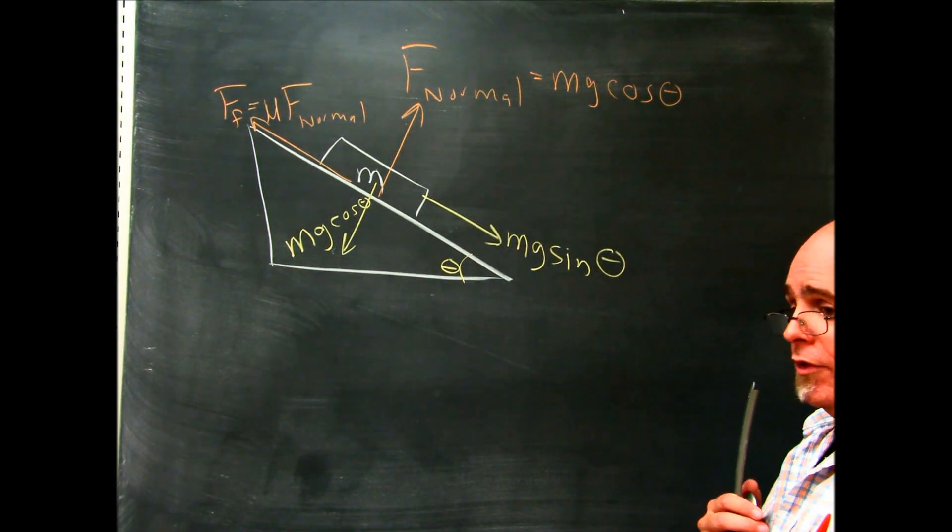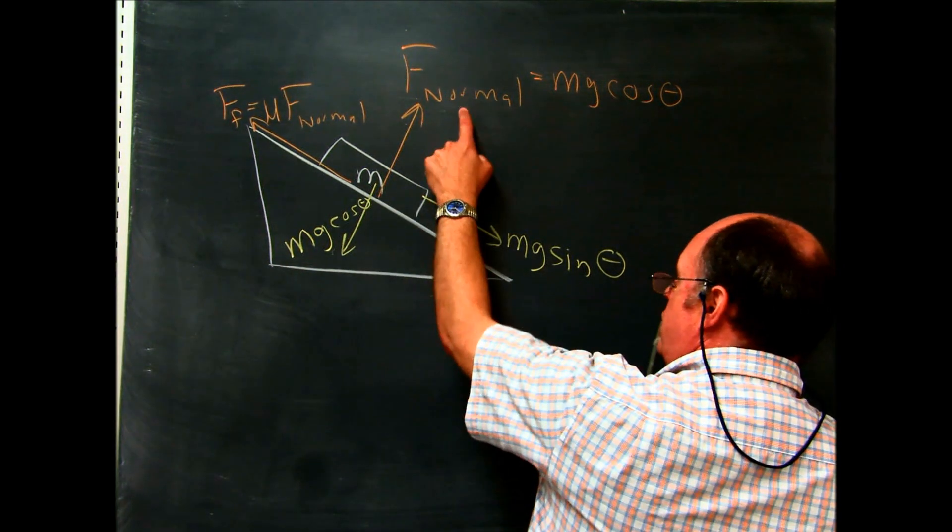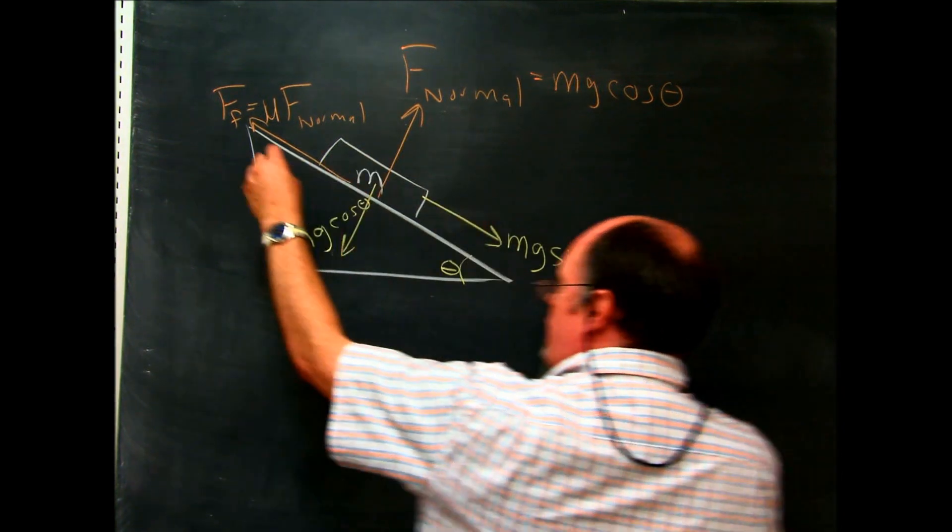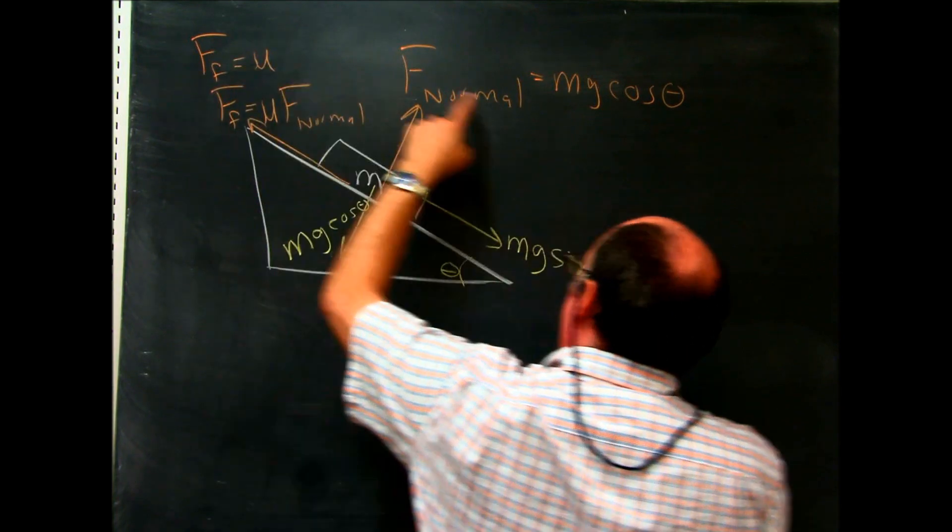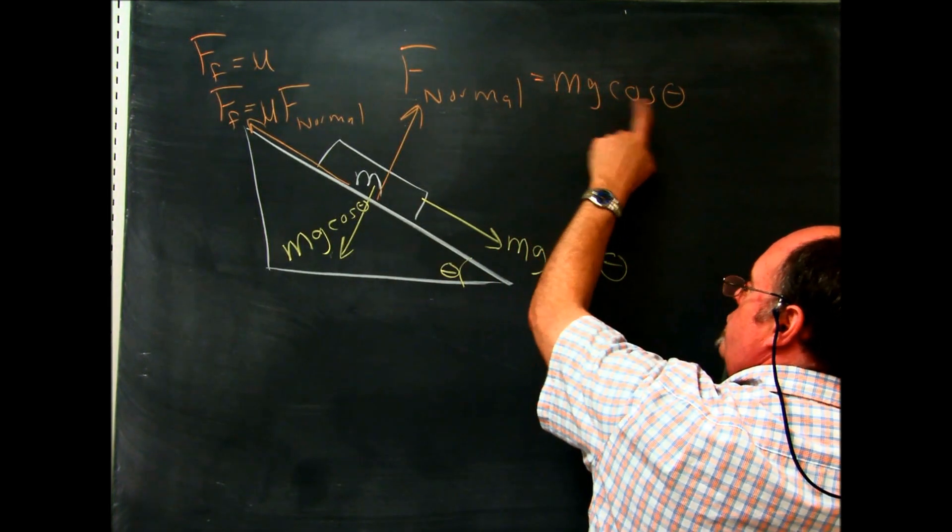But the force normal equals something. So the force normal equals this stuff right here. So instead of saying that, I could say force of friction equals mu, and let me just write this down, mg cosine of the angle.